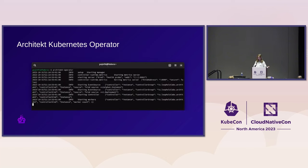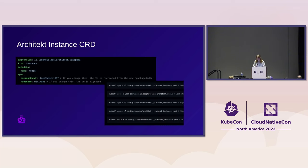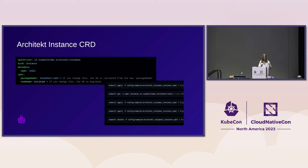We're at KubeCon, so of course we have a Kubernetes operator. What it does is connect this migration technology with Kubernetes. We have a CRD called an instance where you specify a package and a node you'd like it to run on. You just run kubectl apply, and that's running a virtual machine. If you want to move it from A to B, you just change that one string and the VM migrates without any downtime.